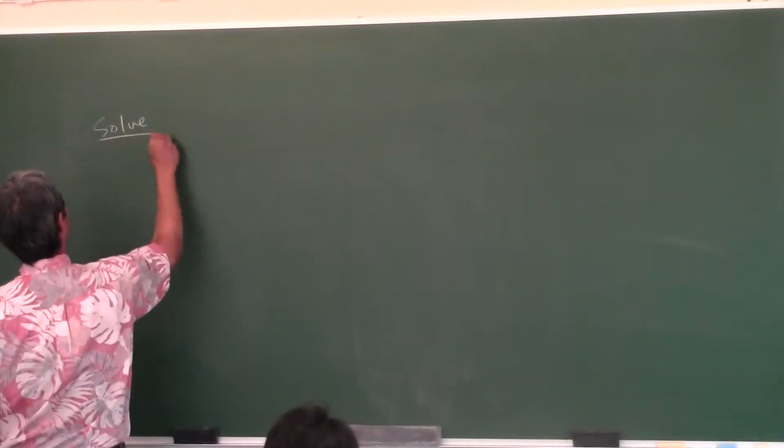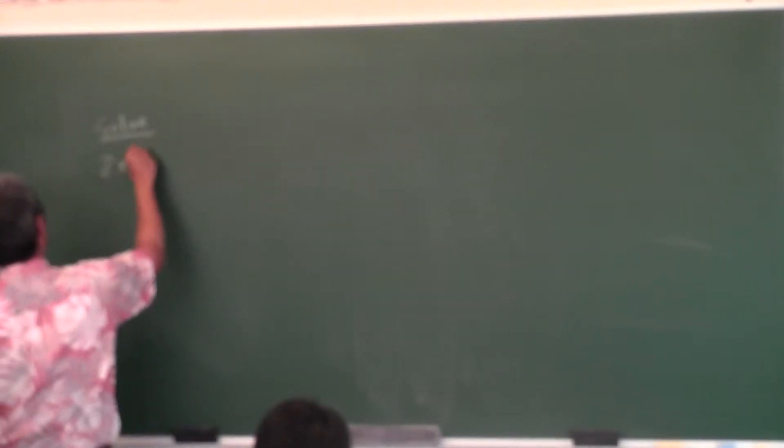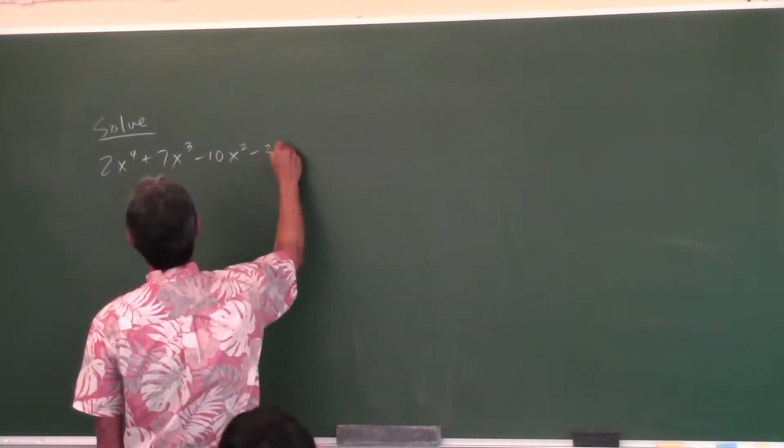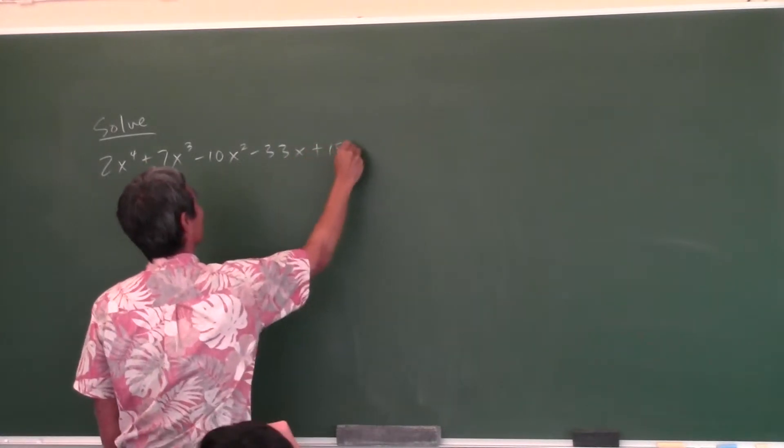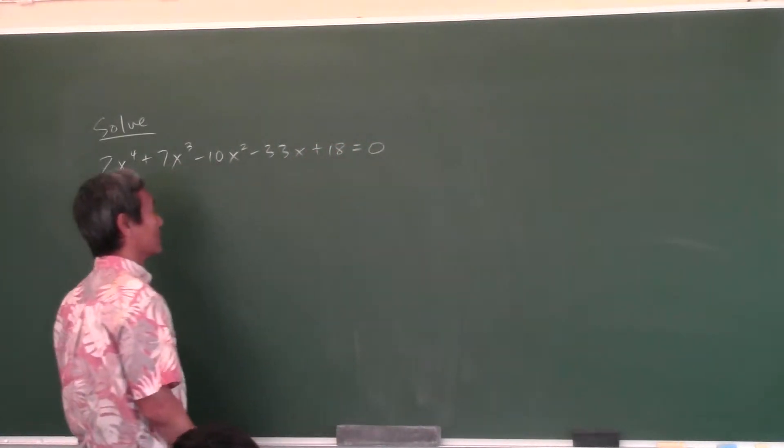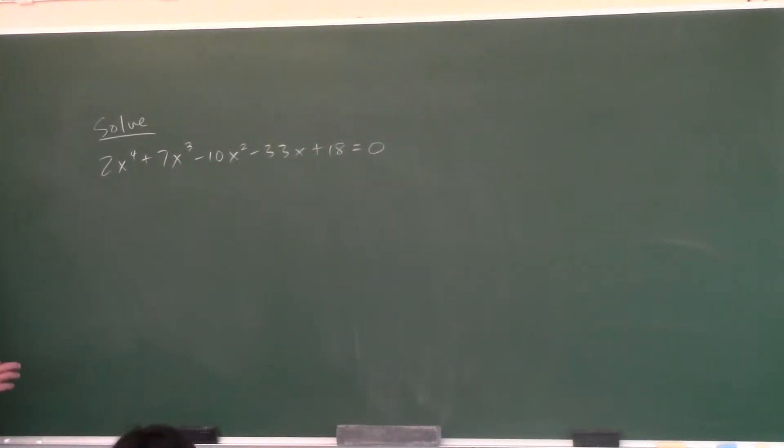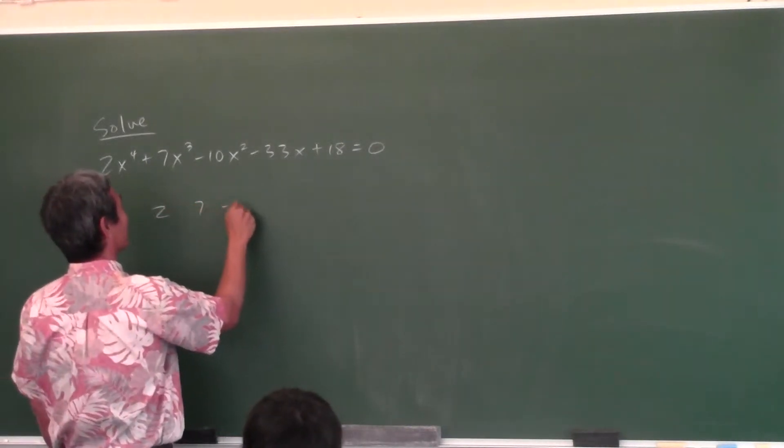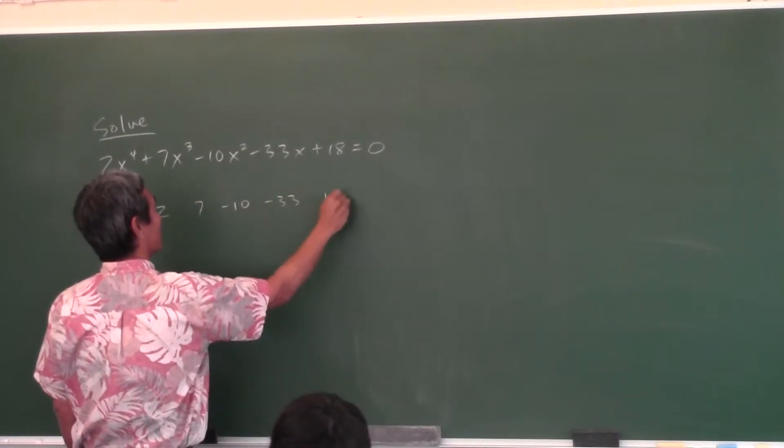So, solve this equation: 2x to the fourth plus 7x cubed minus 10x squared minus 33x plus 18 equals zero. So to solve a polynomial equation, what you need to do is you need to factor it. That's the key. And how do you factor? You use synthetic division. So 2, 7, negative 10, negative 33, 18.